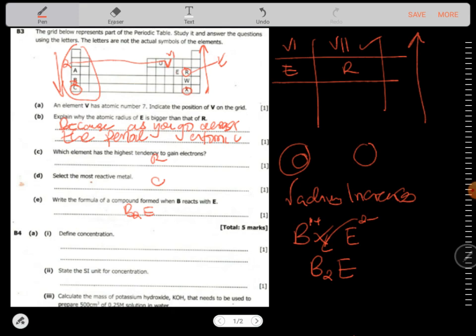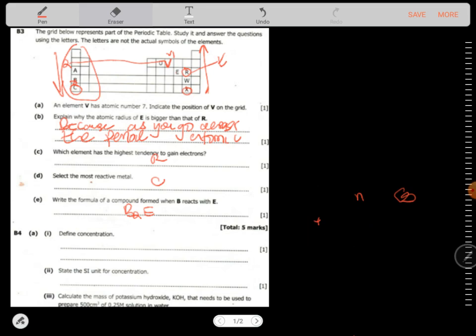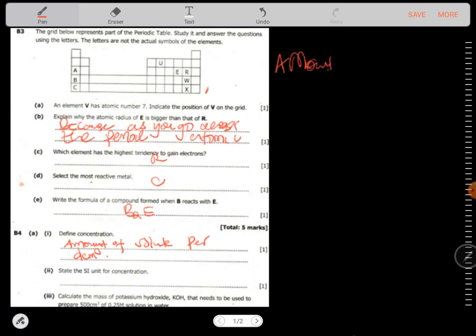Define the term concentration. What is concentration? Concentration is the amount of the solute per decimeter cubed of a solution, or you can say it's the amount of a substance per unit volume.